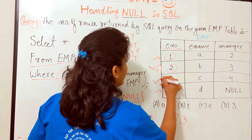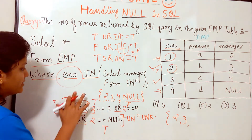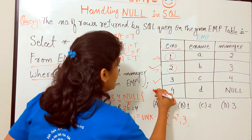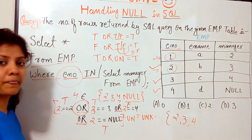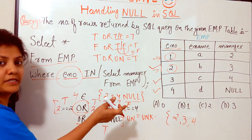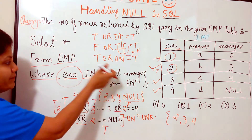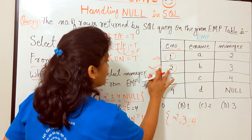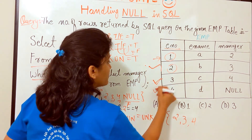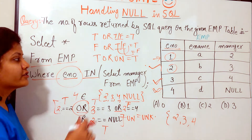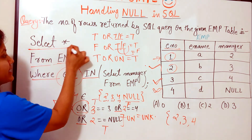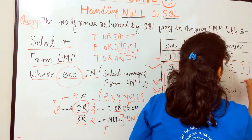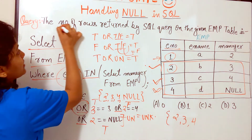For employee_number = 4: checking 4 against the set, 4 = 4 is true, so this tuple is also selected. Out of the 4 tuples in the table, 3 tuples — those with employee numbers 2, 3, and 4 — satisfied the condition and will appear in the output.